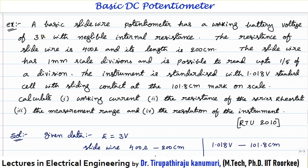Let us take one more example to understand the basic working principle clearly. A basic slide wire potentiometer has a working battery voltage of 3 volts with negligible internal resistance. The resistance of the slide wire is 400 ohms and its length is 200 centimeters — meaning 2 ohms per centimeter. The slide wire has 1 mm scale divisions, and it is possible to read up to 1/5 of a division, meaning we can position the slide wire accurately to 1/5 mm. The instrument is standardized with a 1.018 V standard cell with the sliding contact at 101.8 centimeter mark. Calculate: the working current, the resistance of the series rheostat, the measurement range, and the resolution of the instrument.